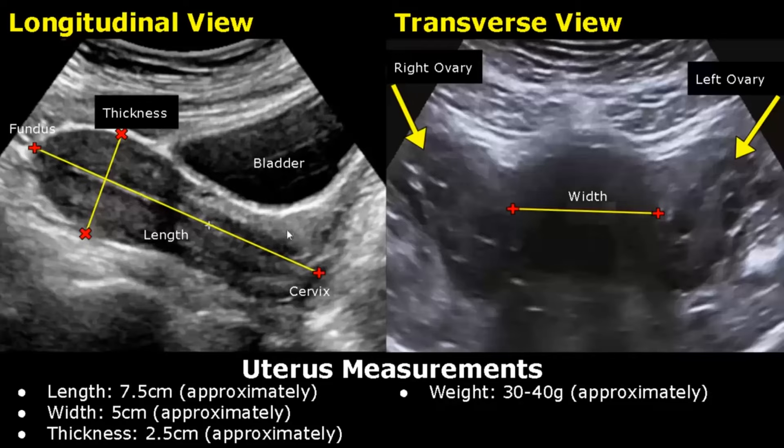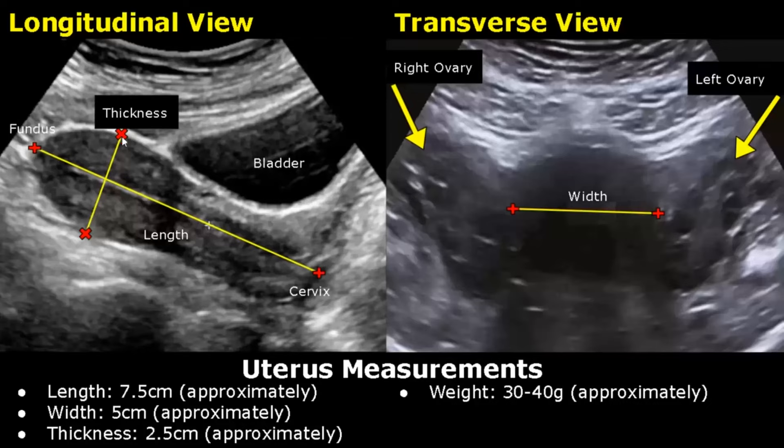In the longitudinal view, we can measure the length and the AP thickness of the uterus. One caliper is placed at the top of the fundus and the other caliper is placed at the base of the cervix. The length of the uterus is around 7.5 cm approximately, and the thickness is around 2.5 cm.